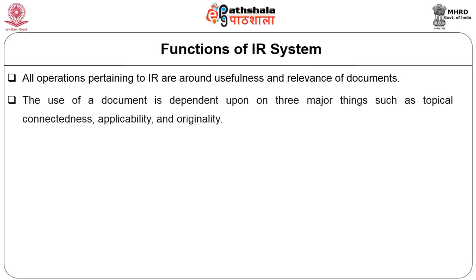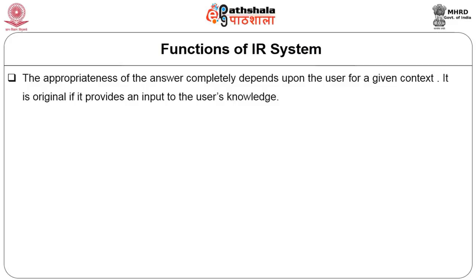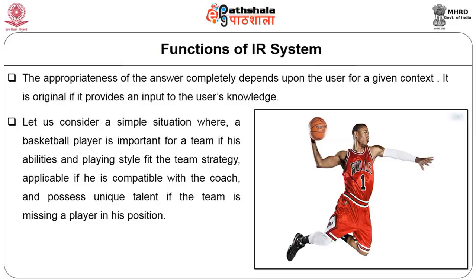The use of a document is dependent upon three major things: topical connectedness, applicability and originality. A resource is considered topically significant for a particular context, question or task if it consists of information that either instantly provides an answer to a query or can be used in combination with other information to infer an answer or perform a task. The appropriateness of the answer completely depends upon the user for a given context. It is original if it provides new input to the user's knowledge. For example, a basketball player is important for a team if his ability and playing style fits the team strategy, if he is compatible with the coach and possesses unique talent — similarly, an IRS should be planned according to its intended function.